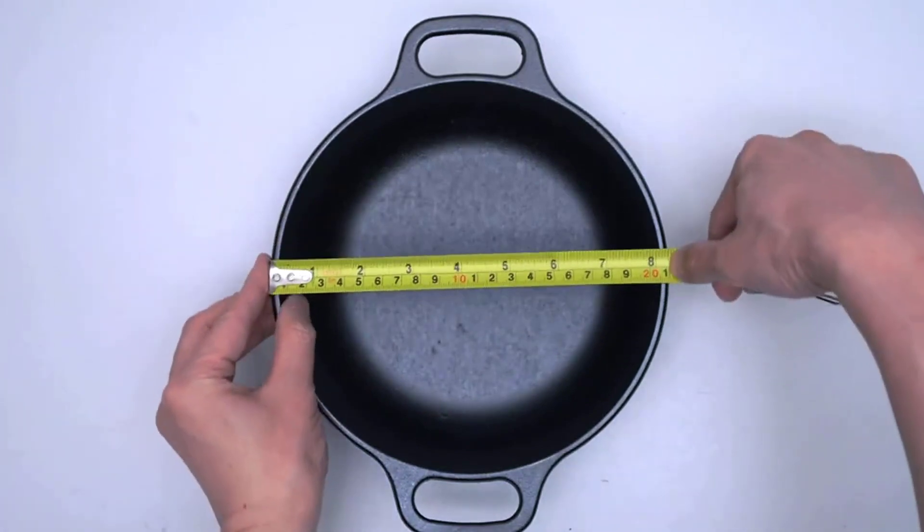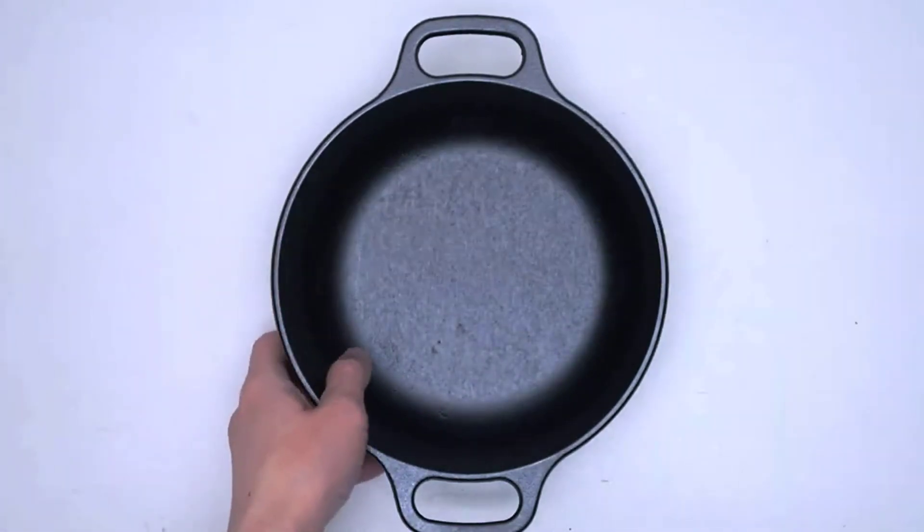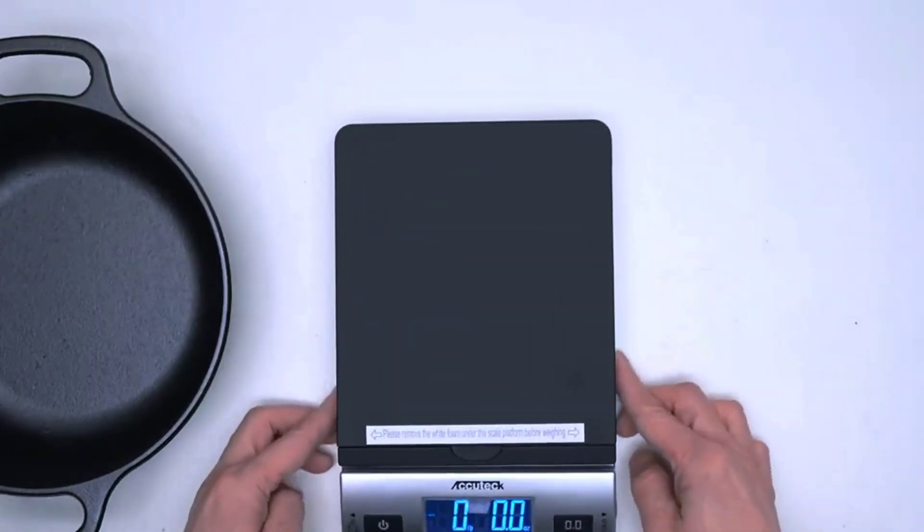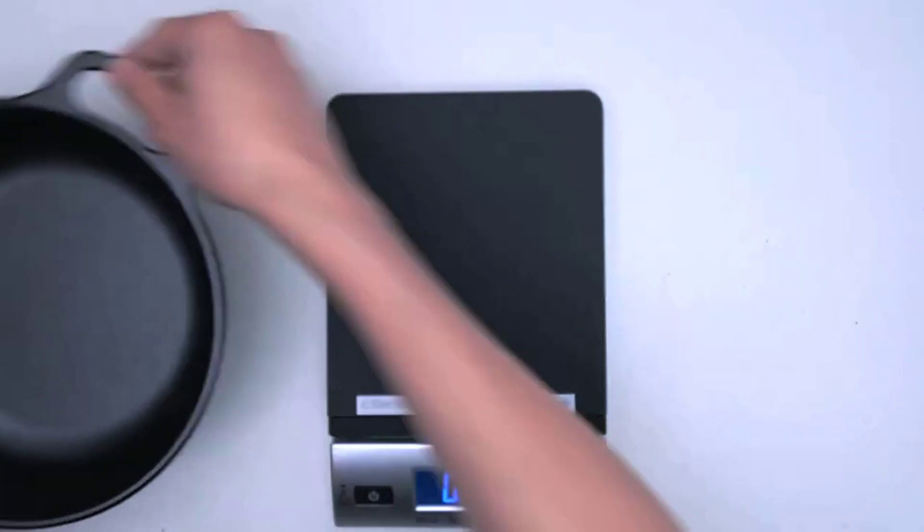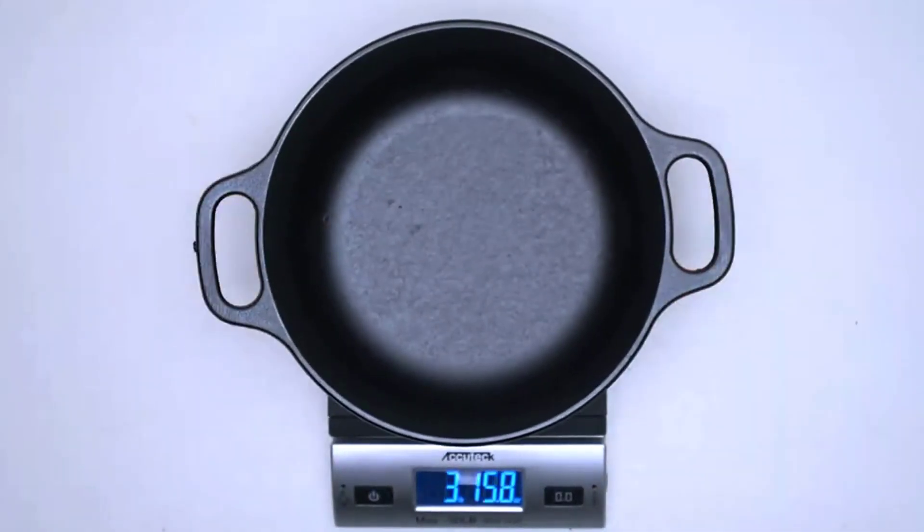The sturdy handles on either side of the pot are well designed and provide a secure grip, even when the pot is hot. They make it easy to transport the pot from the stovetop to the table without any fear of accidents or spills.